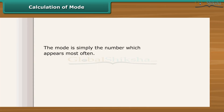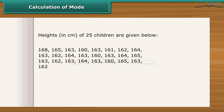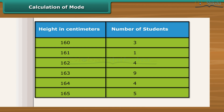The mode is simply the number which appears most often. To find the mode, we need to first put the numbers in order, then count how many of each number, and see which numbers appear most often. In this case, 8 appears two times, so the mode is 8. Now look at this data — it shows the height of 25 children in a class. Let us find out the mode of their heights. First, put the numbers in order and put them in a tabular form, then count how many of each number. Here, 163 appears 9 times, so the mode of the children's height is 163.